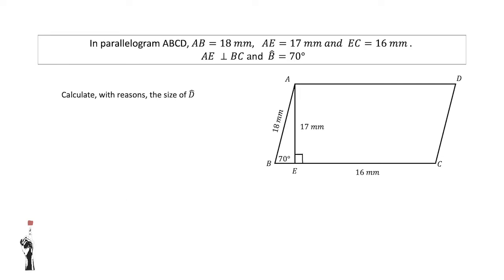Now, calculate with reasons the size of angle D. We currently know that angle B is equal to 70 degrees, and we know that the properties of a parallelogram states that the opposite angles of a parallelogram are equal. Angle B and angle D are opposite angles, so they will be equal. Therefore, angle D will be the same size as angle B, which is 70 degrees. Reason: opposite angles of a parallelogram are equal.